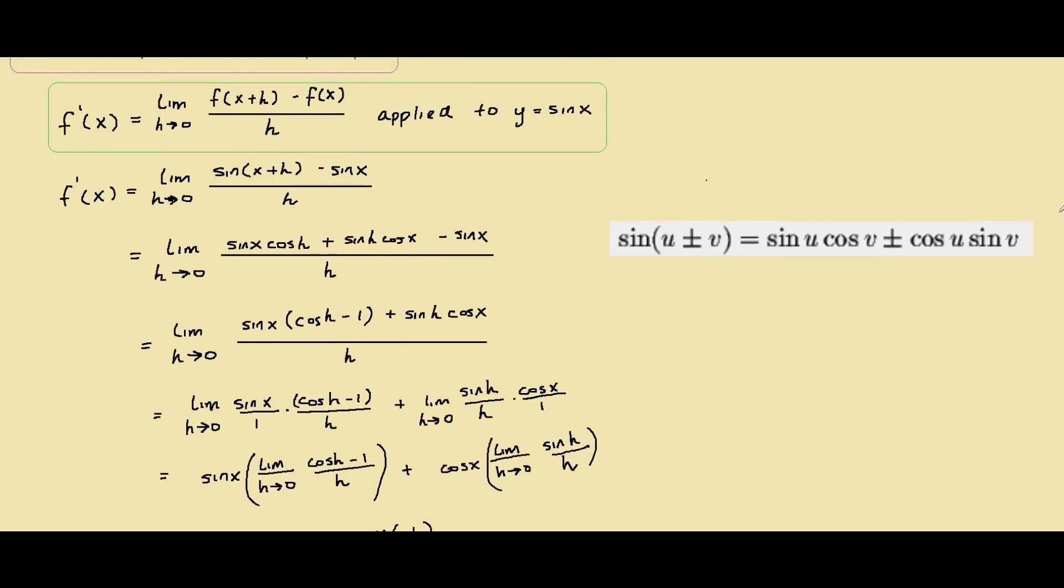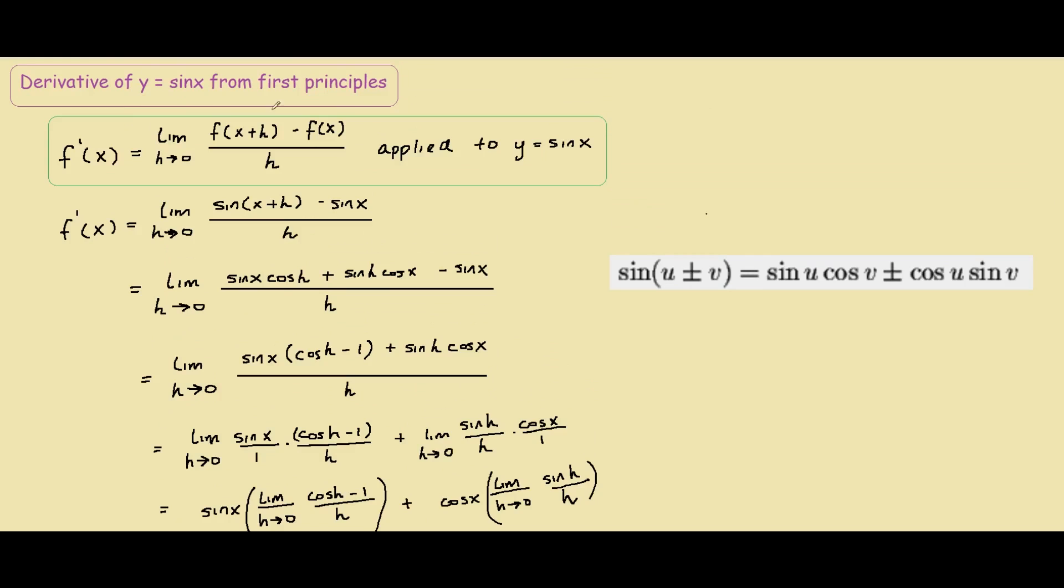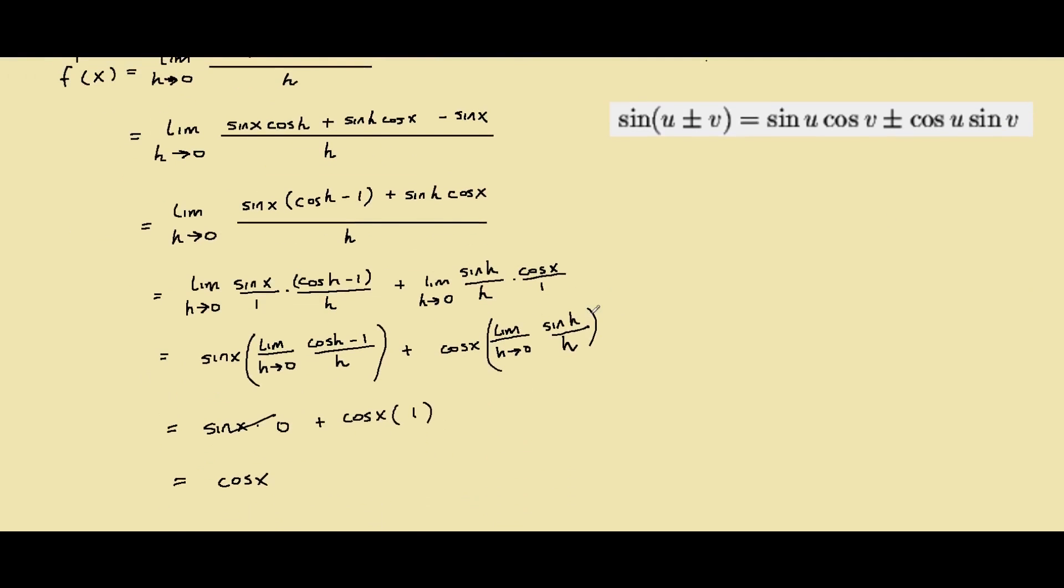So that's the derivative of sin x from first principles. I know this is the most confusing step, but I'll be covering these limits in a different video if you're interested in the proof of why cos h minus 1 divided by h is 0 and sin h divided by h is 0 as the limit approaches 0.